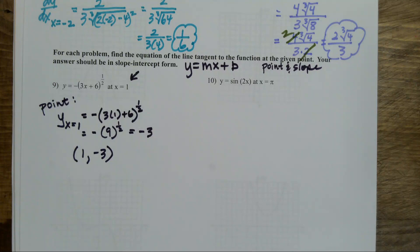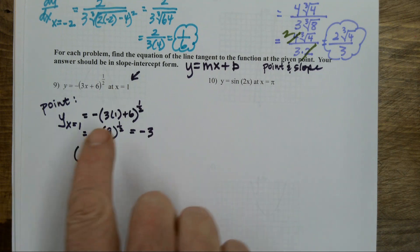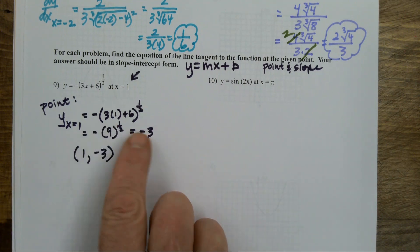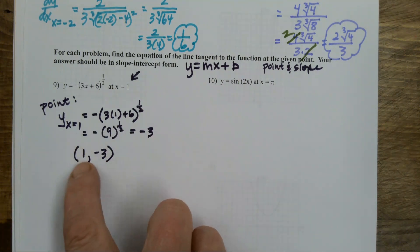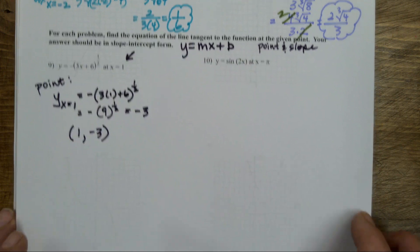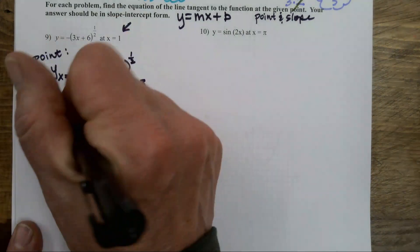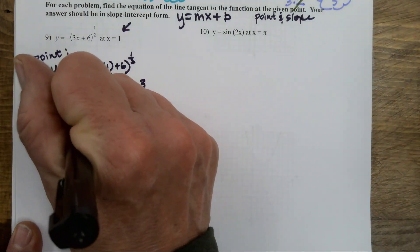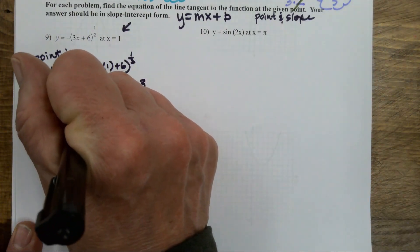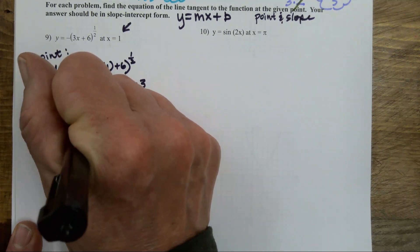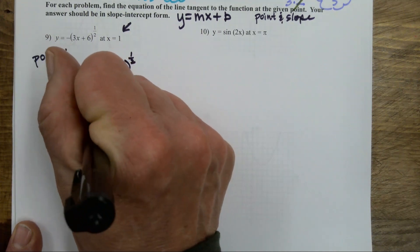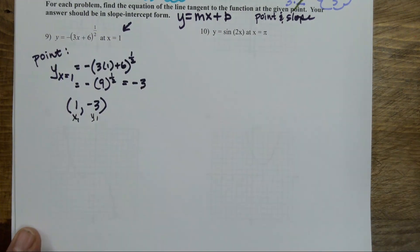That is the opposite of 3 times 1 plus 6, raised to the one-half power — or the opposite of 9 to the one-half power, which is the square root of 9, so negative 3. There's my point. When I plug in 1, I get out negative 3. It's not just giving me the point — I have to do the work.